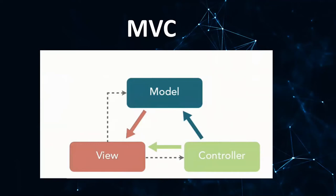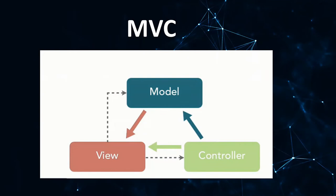Then it alerts the controller for a particular event with what the views requested. The controller controls all the logic and then alerts the model that it has synced and updated the model. The model is directly connected to the data. Whenever something changes by the controller, the model checks for validation, then it updates the data and alerts the view that it has changed. This is how the MVC structure works.